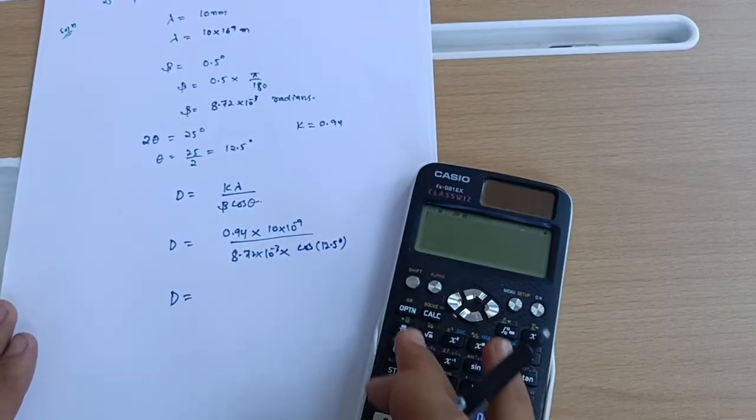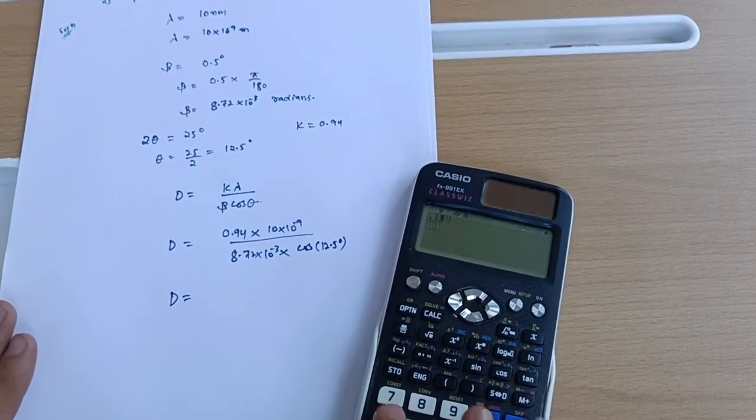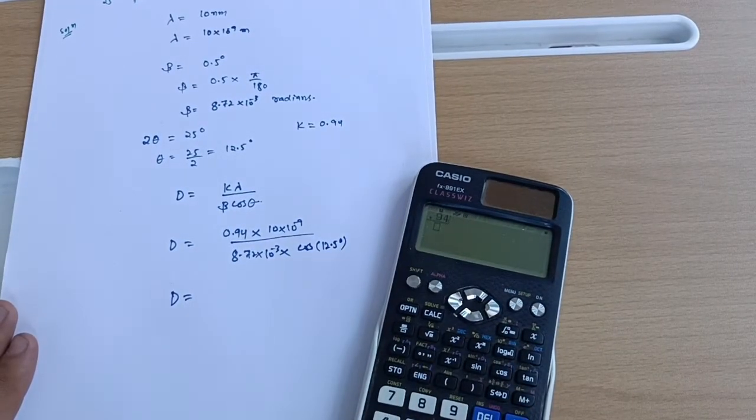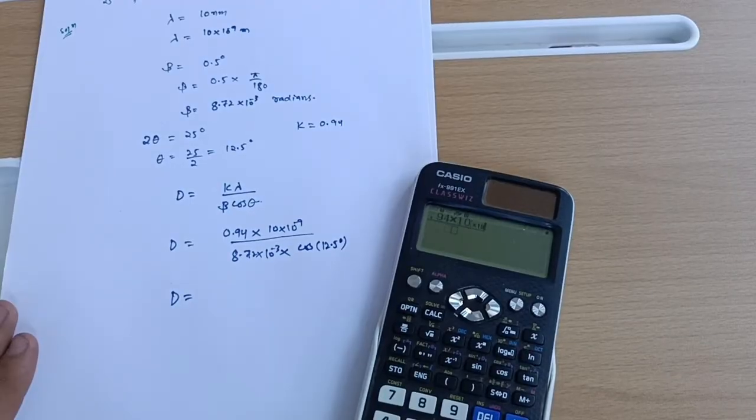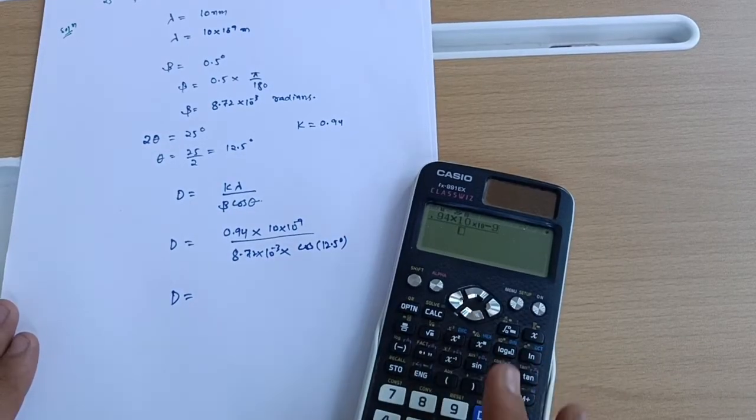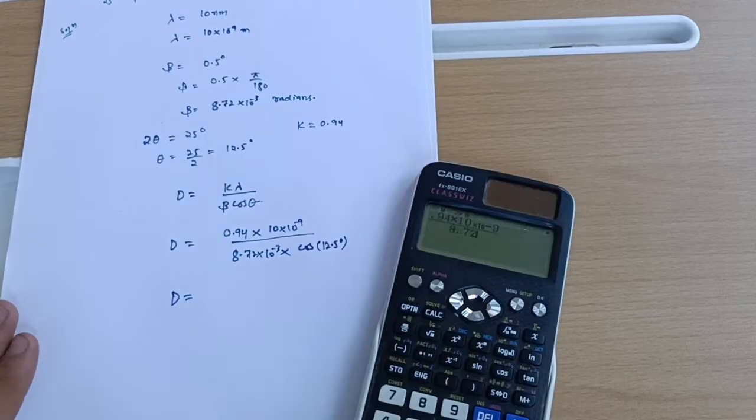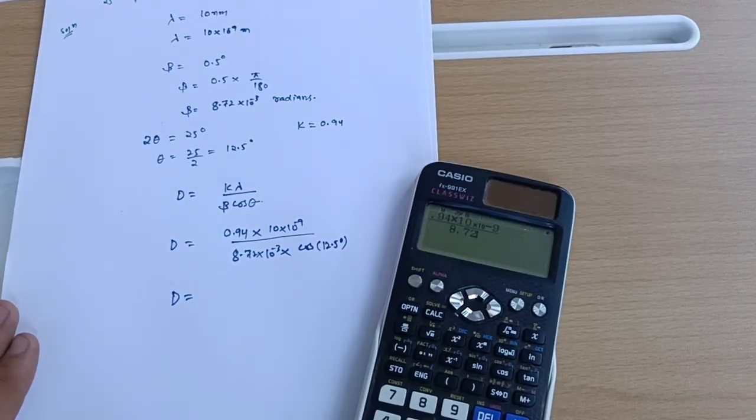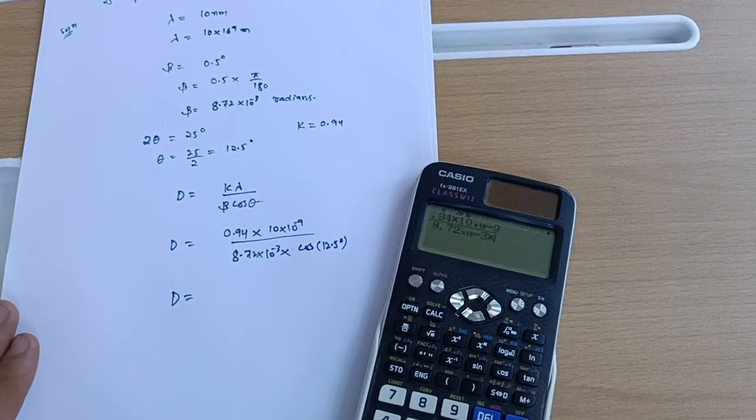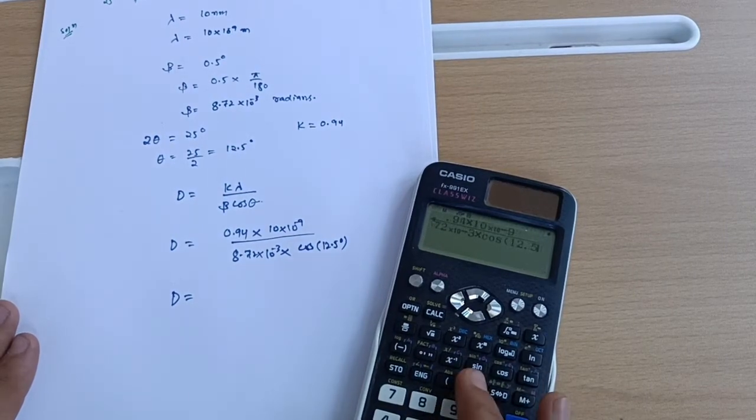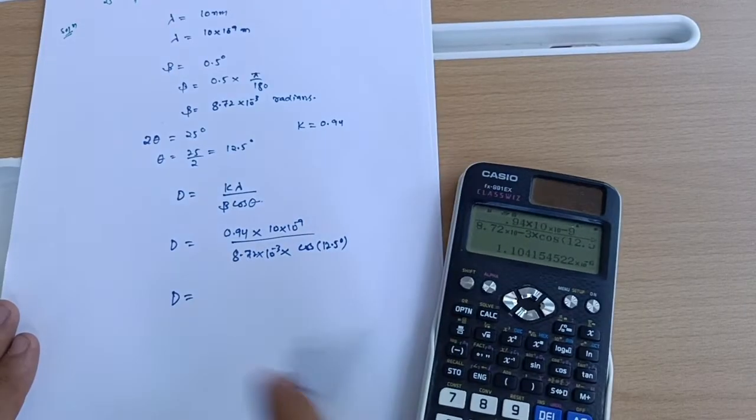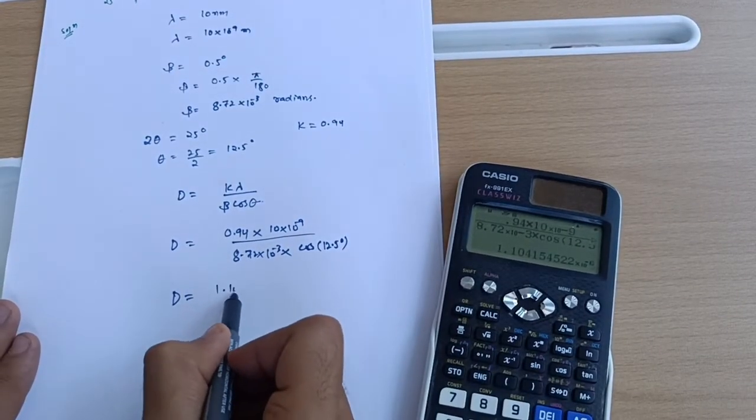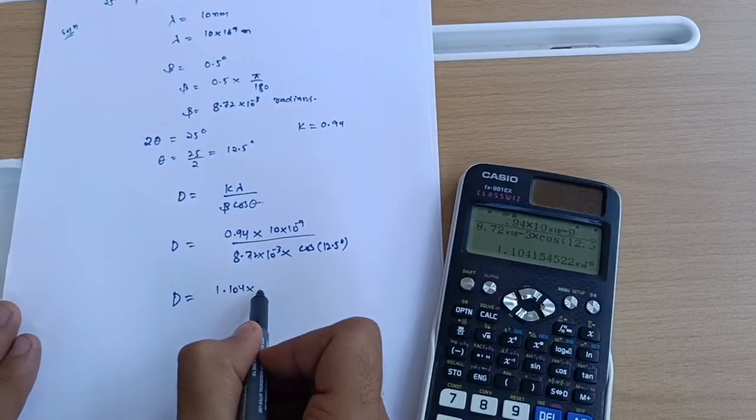So D = 0.94 × 10 × 10^-9 / (8.72 × 10^-3 × cos 12.5°), which equals 1.104 × 10^-6 meters.